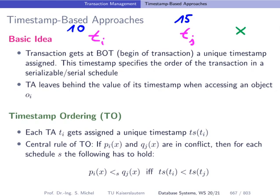So we remember this in our schedule. If TI is reading X, we store timestamp 10. Later, TJ would like to read or write X and would compare this 15 to 10. The idea is that if you have conflicting operations — like write-write or read-write — this is only possible if the timestamp already assigned to X is strictly smaller than the timestamp of the transaction that now wants to perform a conflicting operation on X.